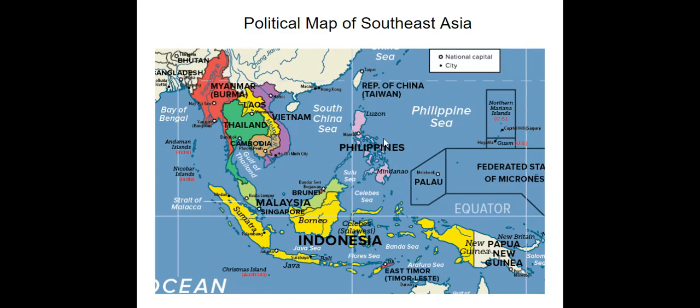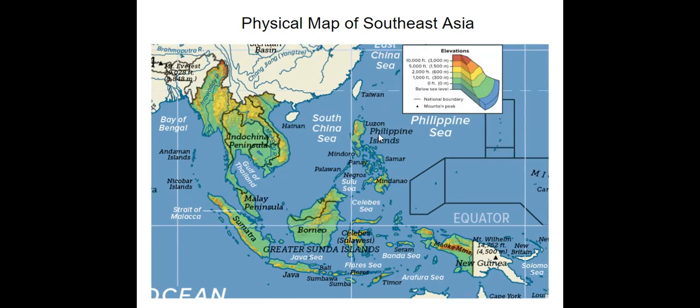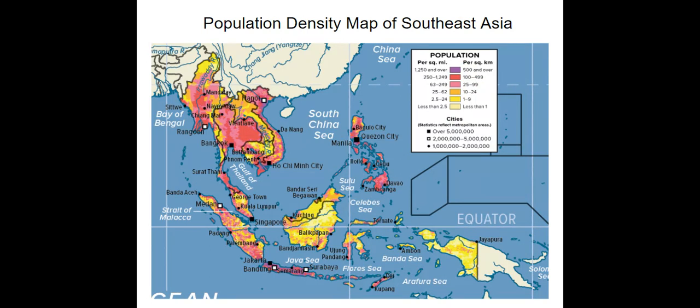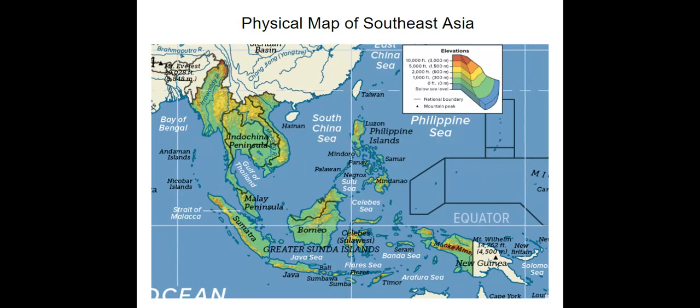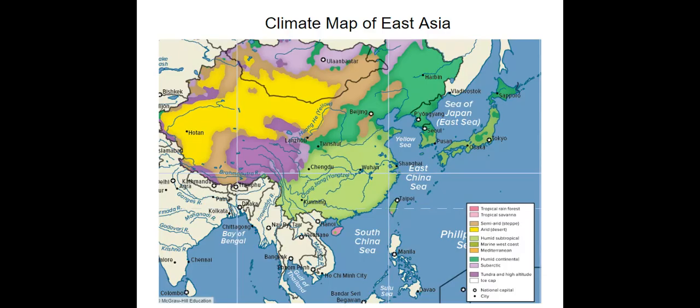The next set of maps is for Southeast Asia, and it follows the same pattern. So we have the political map, the physical map, the population density map, and the climate map for Southeast Asia. Even though we're going to be learning about both East and Southeast Asia at the same time, these maps have them separated so that you can get a clearer idea.